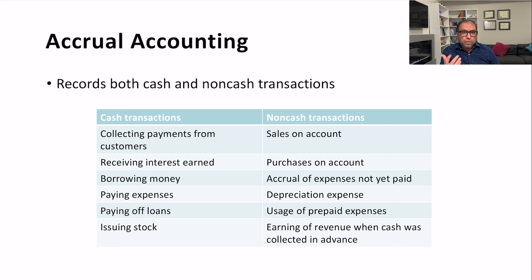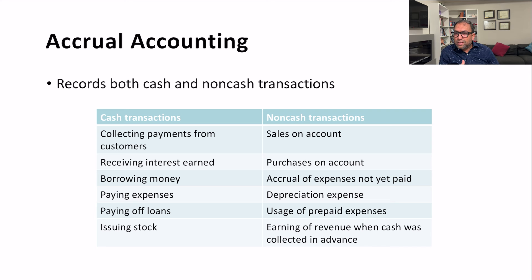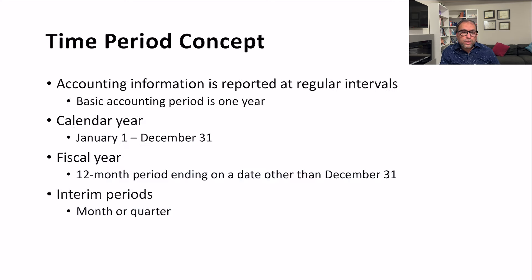Other non-cash transactions include usage of prepaid expenses — for example, prepaid rent: debit rent expense, credit prepaid rent. There is also earning of revenue when cash was collected in advance: debit the liability account and credit services revenue or the applicable revenue account. These are all examples of how accrual accounting captures non-cash economic activity.